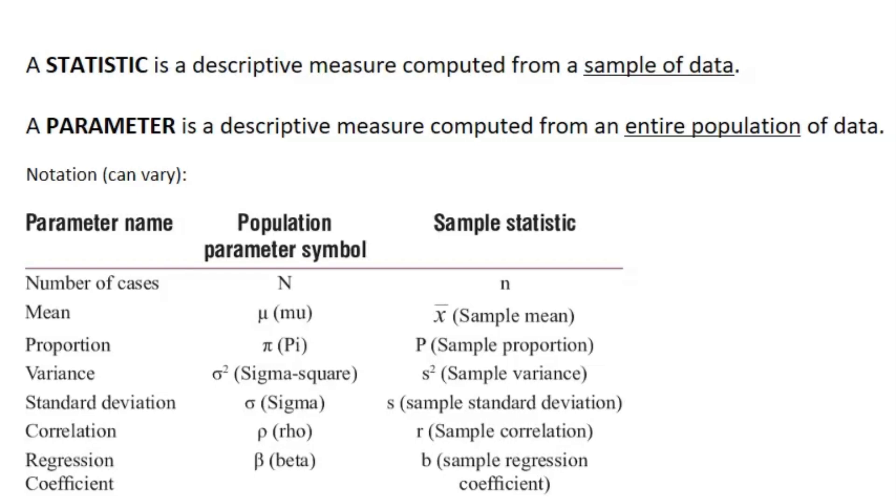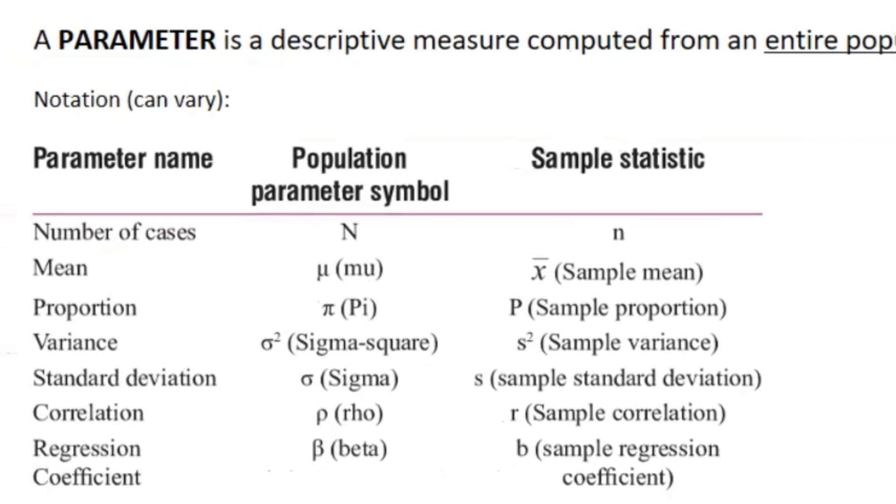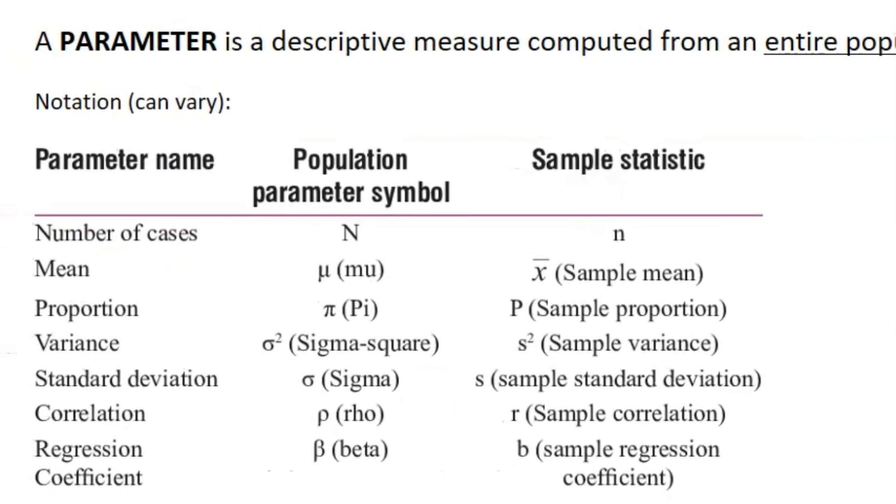First, we differentiate between a statistic and a parameter. A statistic is any number that describes something from a sample of data, while the opposite is a parameter, which describes something from an entire population of data. The most common ones are mean and proportion, which we'll dive more into later.